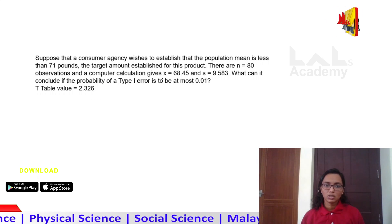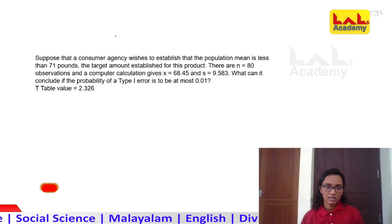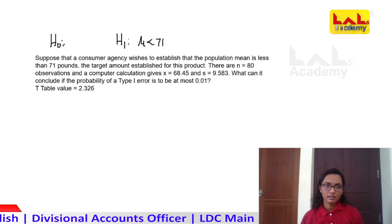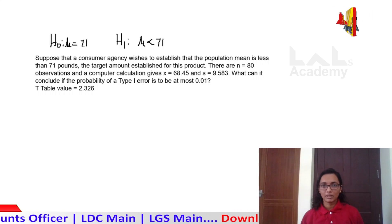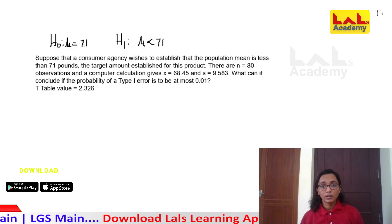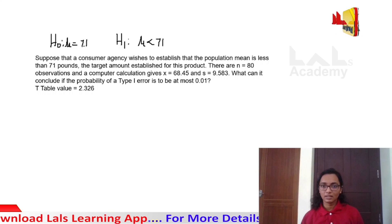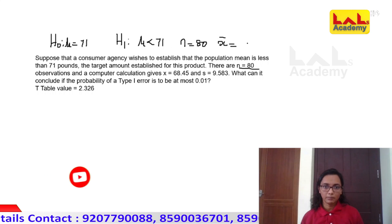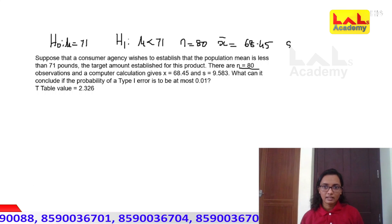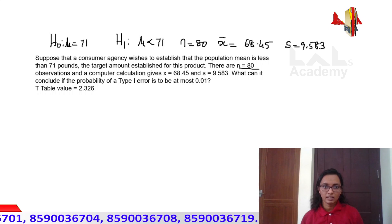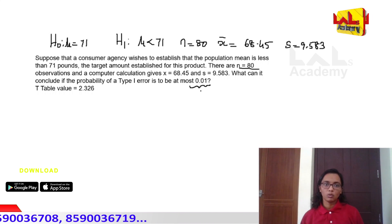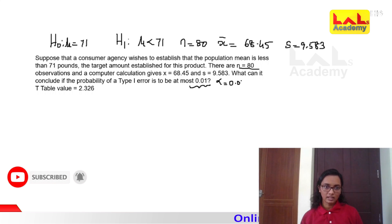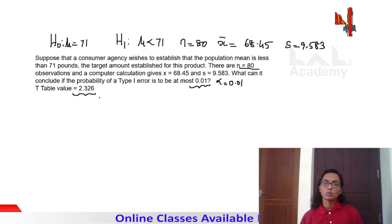Suppose a consumer agency wishes to establish that the population mean weight is less than 71 pounds. We claim that the population mean mu-zero is 71. We have n equal to 80 observations. The sample mean is calculated as 68.45 and the sample standard deviation is 9.583. Alpha is 0.01. What can we conclude if the probability of a type 1 error is to be at most 0.01?